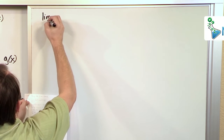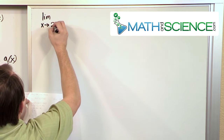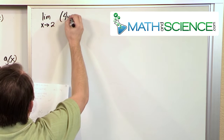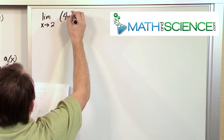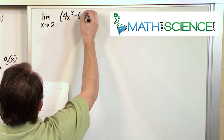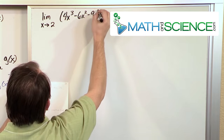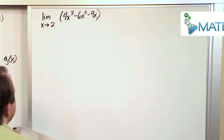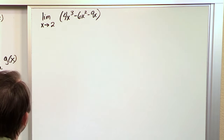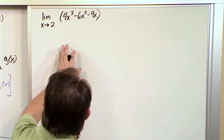What if I have the limit as x approaches 2 of the function 4x cubed minus 6x squared minus 9x? So this is your classic polynomial. What do you think is going to apply here?